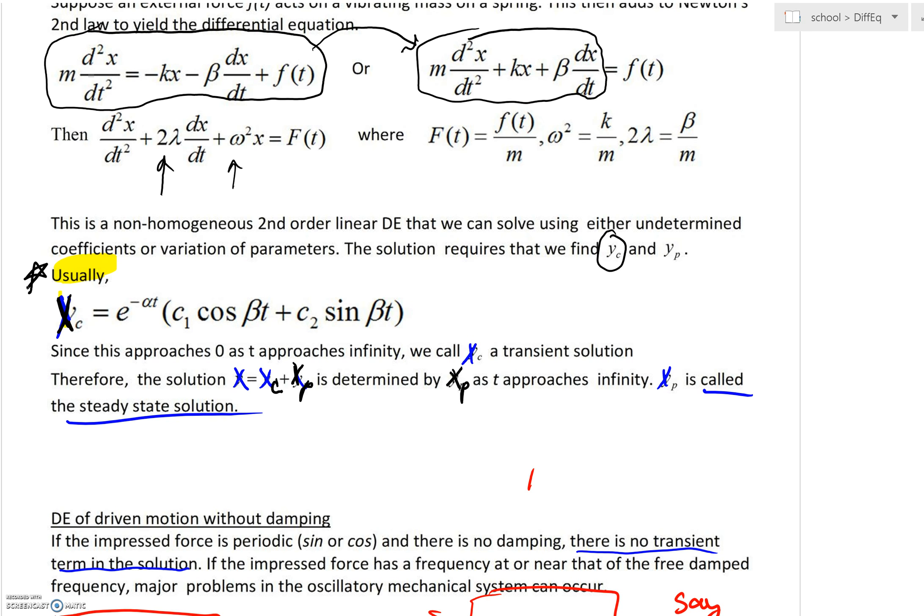You would have e^(-αt) times c₁cos(βt) plus c₂sin(βt).